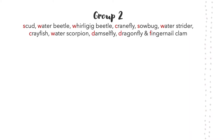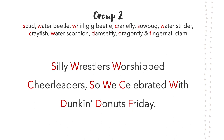For Group 2 macroinvertebrates, we've come up with another mnemonic device: 'Silly wrestlers worship cheerleaders, so we celebrated with Dunkin' Donuts Friday.' This represents scud, water beetles, whirligig beetles, crane flies, sow bugs, water striders, crayfish, water scorpions, damselflies, dragonflies, and the fingernail clam.